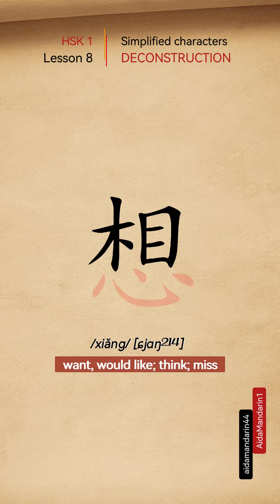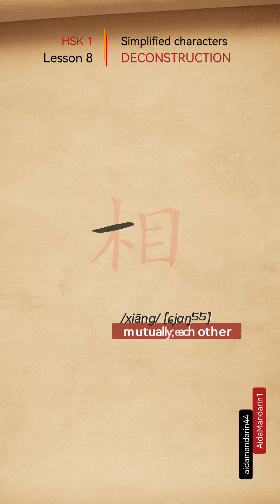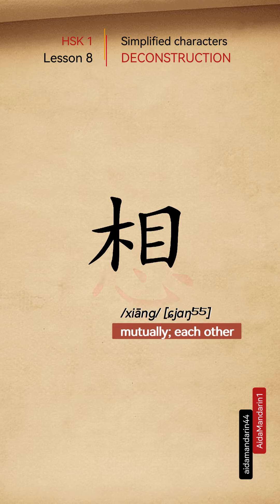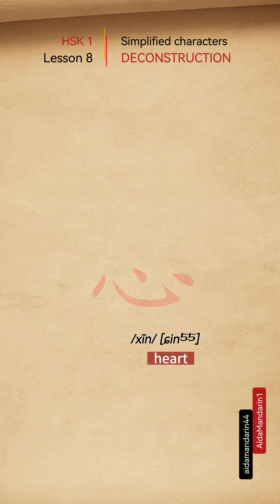It has a top-bottom structure and can be deconstructed into two parts. The top part 想 means mutually, each other. The bottom part 心 means heart.